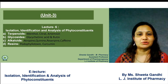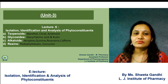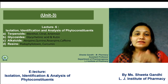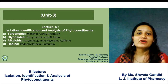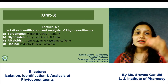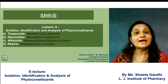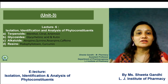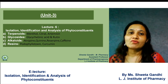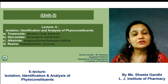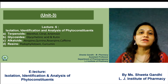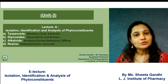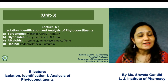This is Unit 3. The difference between this unit and industrial production is that in industrial production we emphasize extraction technologies, estimation, and utilization. Estimation refers to the methods used for quantification of phyto constituents, and utilization refers to their pharmacological uses.